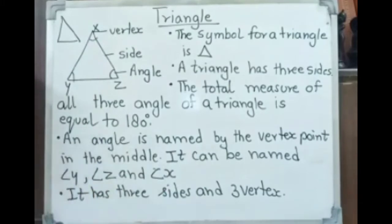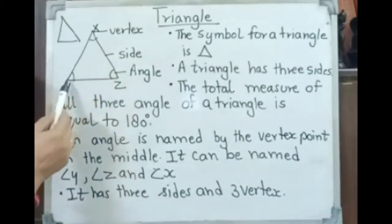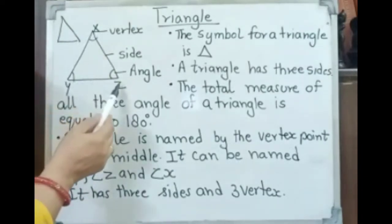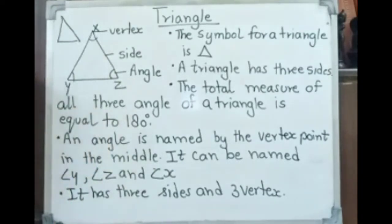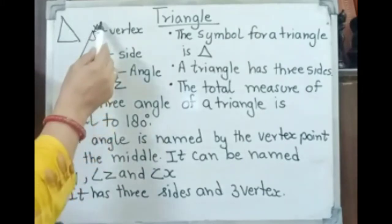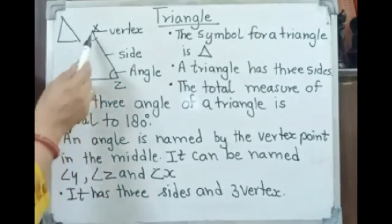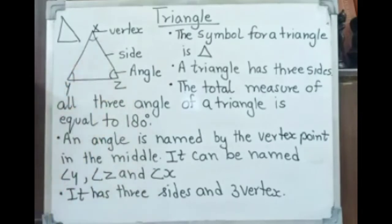An angle is named by the vertex point in the middle. It can be named like angle X, angle Y, angle Z. But when we say triangle, it means X, Y, Z. An angle is named by the vertex point in the middle.